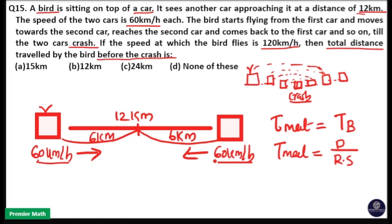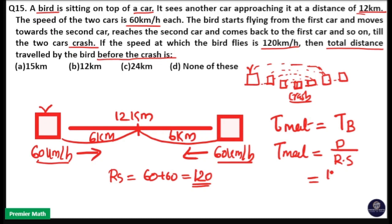The relative speed is 60 plus 60 = 120 km per hour, because both cars are facing each other in opposite directions. So time of meet = distance divided by relative speed = 12 divided by 120 = 1/10 hour. The time of meet equals the time of the bird's flight, which is 1/10 hour.